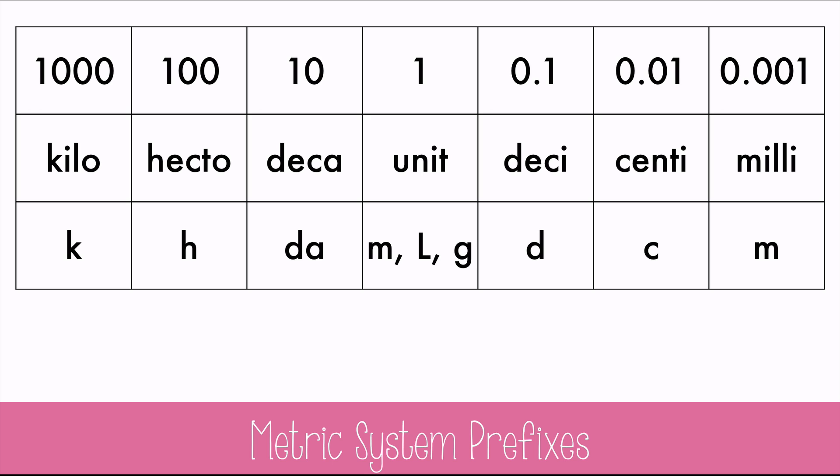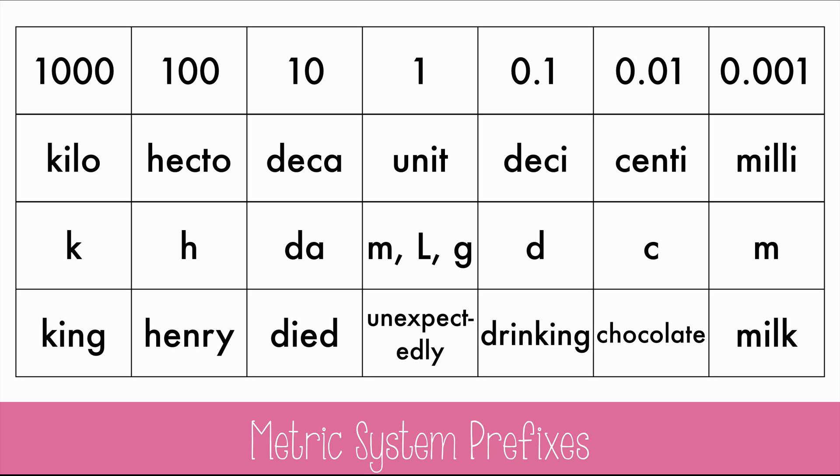I use a mnemonic to remember the order from kilo to milli, and it's King Henry died unexpectedly drinking chocolate milk. But you can make up your own to help you remember their order.